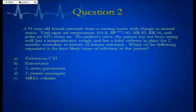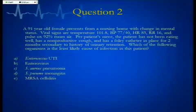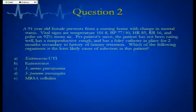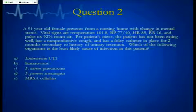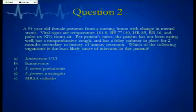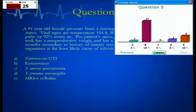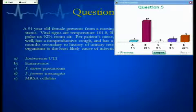Second patient: 91-year-old female from a nursing home with change in mental status. Vital signs: temperature 101.8, blood pressure 77/40, heart rate 85, respiratory rate 16, pulse ox 92% on room air. Her niece says she hasn't been eating well, has a non-productive cough, and a Foley catheter in place for two months secondary to urinary retention. Which organism is the least likely cause of infection? A: Enterococcus UTI; B: Enterovirus; C: Staph aureus pneumonia; D: Strep pneumo meningitis; E: MRSA cellulitis. Majority think B; second place is E.